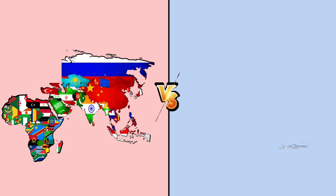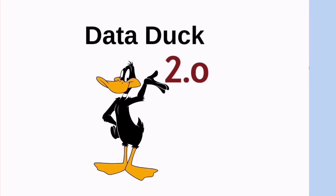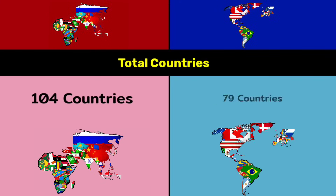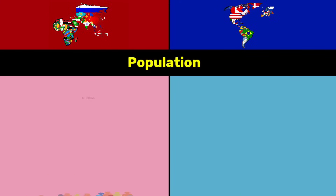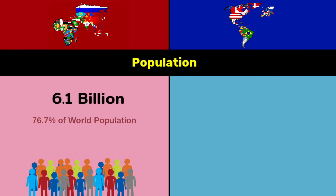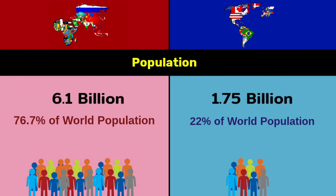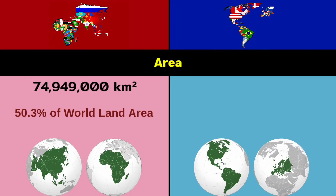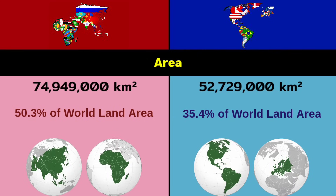Hello guys, today we see Asia plus Africa versus Europe plus Americas. Welcome to our YouTube channel Data Duck 2.0. Total countries: 104 countries vs 79 countries. Population: 6.1 billion — 76.7% of world population — vs 1.75 billion — 22% of world population. Area: 74.9 million square kilometers — 50.3% of world land area — vs 52.7 million square kilometers — 35.4% of world land area.